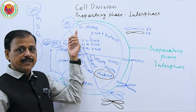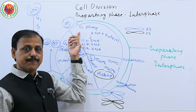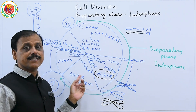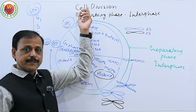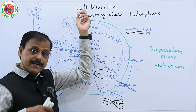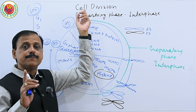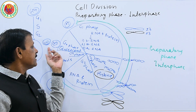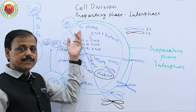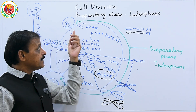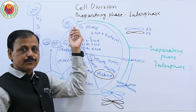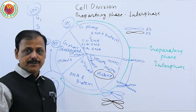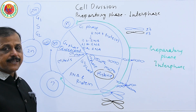When a cell enters G1 phase, it is a deciding phase — whether the cell will enter into the cell cycle or get separated from the cycle and differentiate to attain a specific shape and size to perform a specific function. The cell entering G1 will decide whether to join the permanent cell group or continue in the systematic cycling group. That is what constitutes the cell cycle.